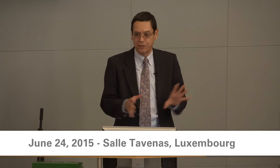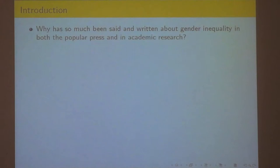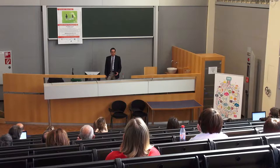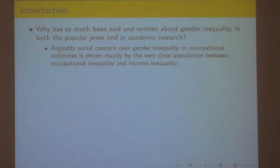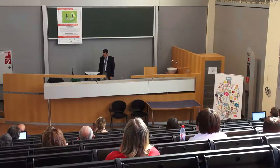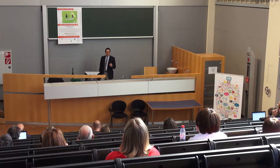I'm going to talk today about the relationship between gender differences in occupation and gender differences in pay and compensation. They're clearly related. So why has so much been said and written about gender inequality in both the popular press and in academic research? My answer would be that social concern over gender inequality in occupational outcomes is driven mainly by a very close association between occupational inequality and income inequality.